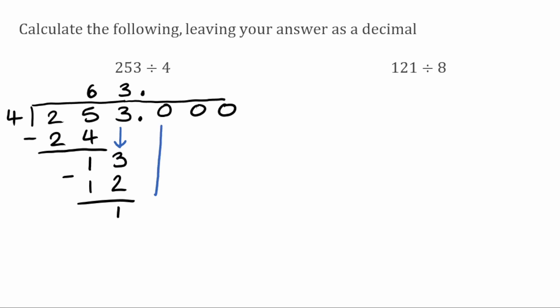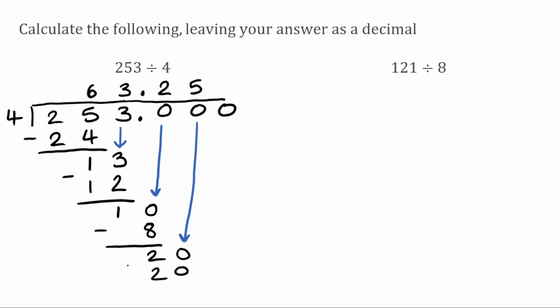We bring down the next digit — a zero — so we've now got 10. How many times does 4 fit into 10? That'll go twice because 4 times 2 is 8. 10 take away 8 leaves 2. We still have a remainder, so bring down the next zero to get 20. 4 fits into 20 five times exactly — 4 times 5 is 20 — remainder zero. Our final answer is 63.25.